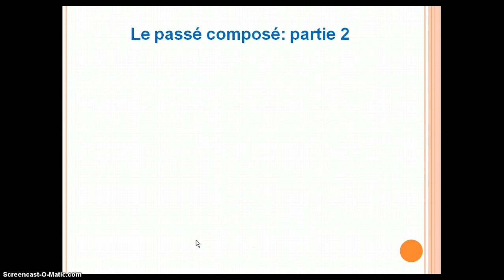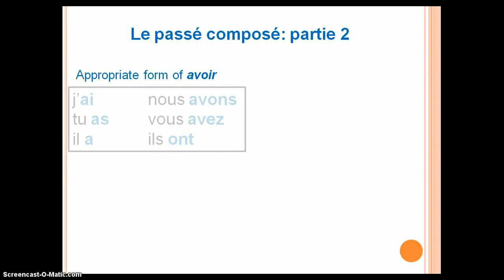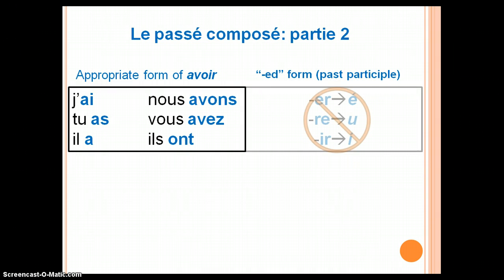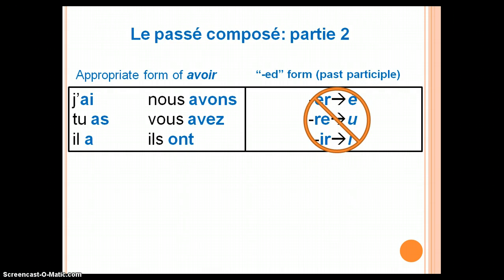The second stage of le passé composé is similar to the first. You still need the appropriate form of avoir and the past participle of your verb. However, in stage 2, these verbs do not follow the traditional pattern of er to é, re to u, and ir to i. These verbs are irregular — they have their own unique past participle form, despite ending in er, re, or ir.